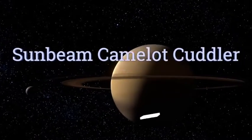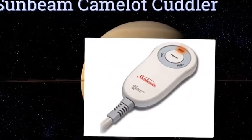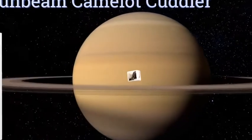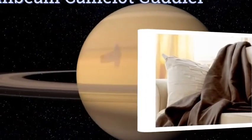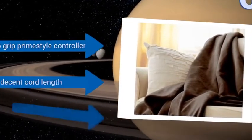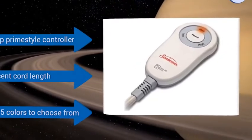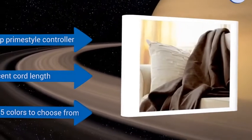Moving up our list to number six, the Sunbeam Camelot Cutler has three different warming settings and a three-hour auto-off function, plus an exclusive wiring system that senses heat in different zones and sends it where you need it. It's not big enough to share, though. It comes with an easy-to-grip Prime Star controller and a decent cord length. It's available in more than 15 colors.